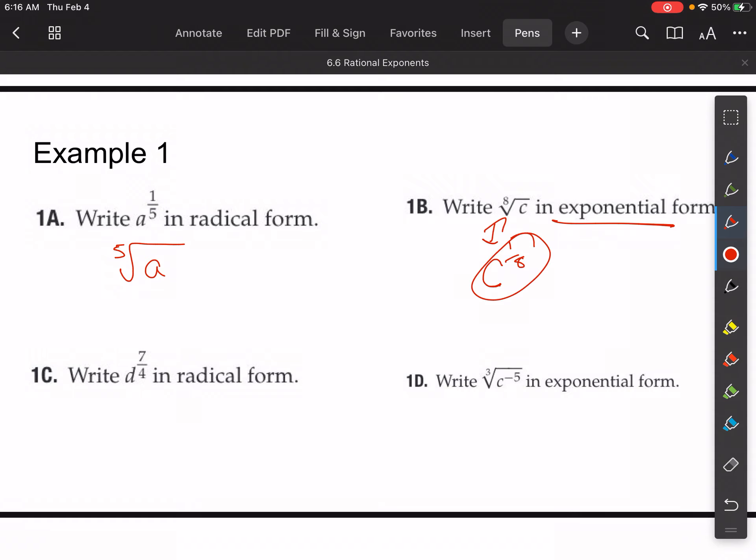And then for this one, it says write d to the 7 fourths in radical form. So pay attention here. If you have a numerator here that's other than 1, that thing is going to be a power that's acting on that d.